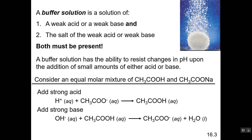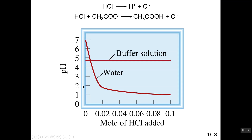This graph demonstrates the difference between a buffer and pure water. The y-axis shows the pH scale and the x-axis shows the amount of HCl added. For pure water, adding acid causes a severe drop from pH 7 to about 2 when 0.02 moles of HCl are added. In the case of the buffer solution, there is only a gradual, very slight change in pH when acid is added.